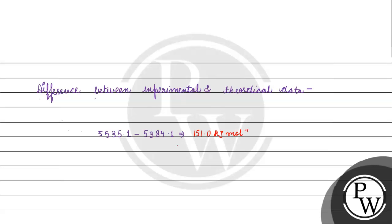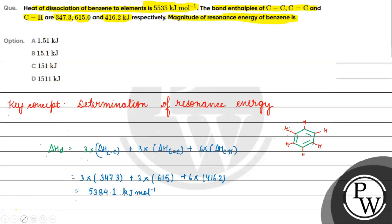The result is 151 kilojoule per mole. The experimental data was 5535, and we theoretically calculated the heat of dissociation. The difference gives us 151 kilojoule per mole, which is the resonance energy. Coming back to the question, the correct answer is option C. I hope you understood it well. Thank you and all the best.